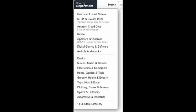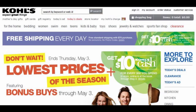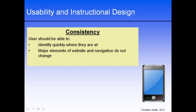This same principle holds true for navigating through web and software interfaces. Good usability and consistency means that users should be able to quickly identify where they are within your application at any given time without much effort. Consistency also means that elements otherwise remain constant so that the user is able to gain a certain level of familiarity, allowing them to focus on content and not get distracted.